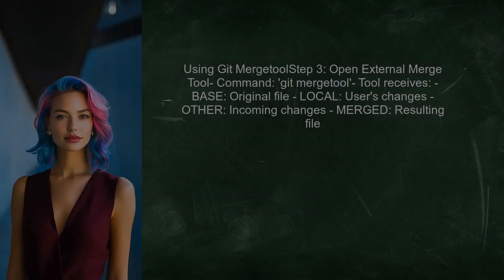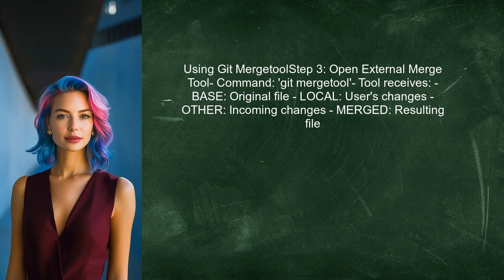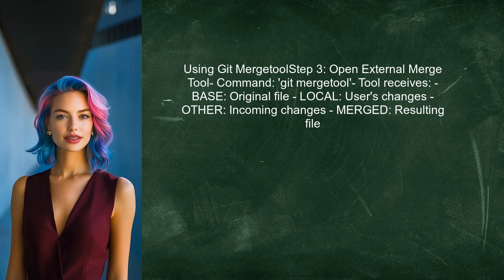Next, when you run the Git merge tool command, the configured external merge tool opens. This tool receives the base, local, and other versions of the file, along with the merged output.